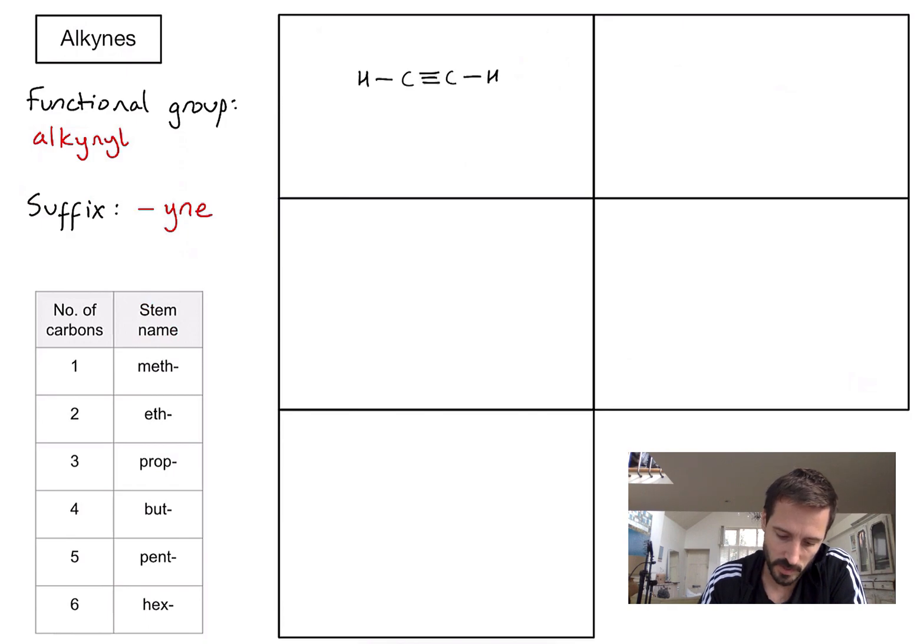Let's have a look at some examples. Here's the first one. I can see my alkynyl functional group between those two carbons. So what do we need to do first? We need to count the number of carbons in my main chain. I've got one, two, and two carbons relates to the stem name of eth.